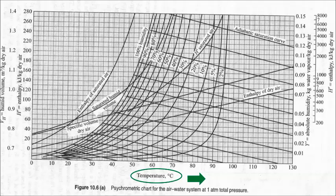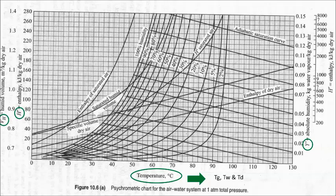Firstly, the horizontal axis at the bottom shows the dry bulb, wet bulb, and dew point temperature. Next, the absolute humidity is on the right vertical axis, while the other side of the vertical axis shows the enthalpy and humid volume. Besides that, there are also relative humidity lines.